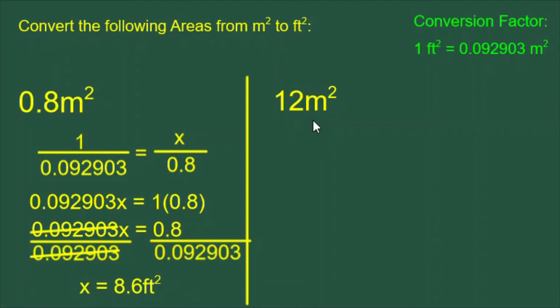Let's look at our second example, 12 meters squared. We build the proportion in the same way with the 12 meters squared on the bottom on the right, because on the left, we have meters squared on the bottom.